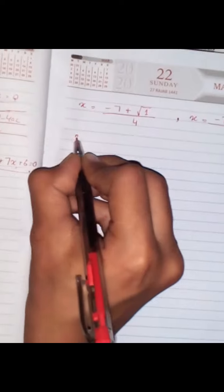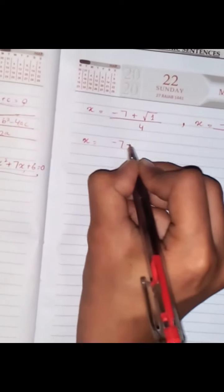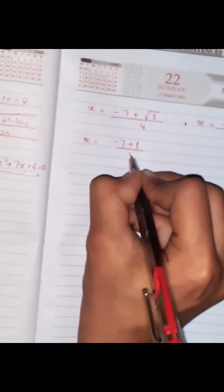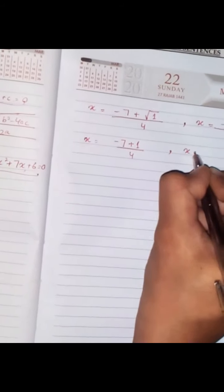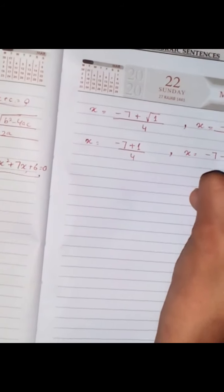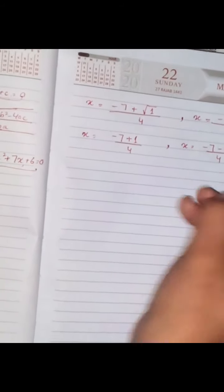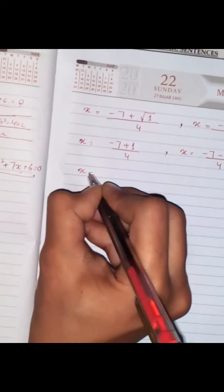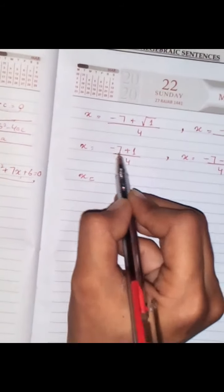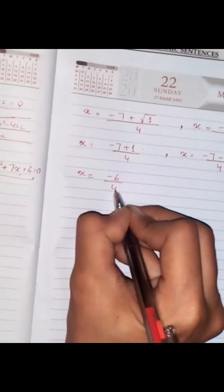Now the root of 1 is 1. So -7 + 1 divided by 4, which equals -6 divided by 4.